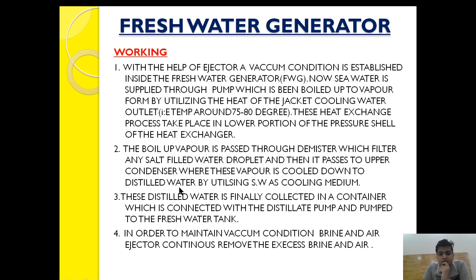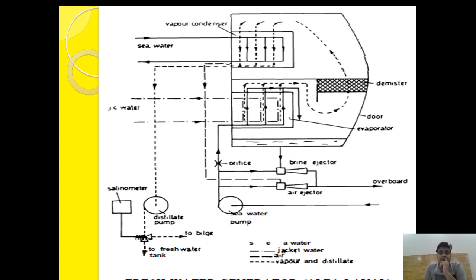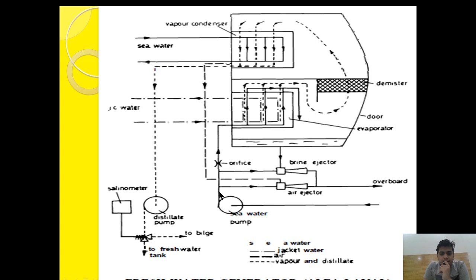After passing the demister, the vapor is passed to the upper condenser where it is cooled down to distillate water by utilizing sea water as the cooling medium. The sea water from the sea water pump also provides cooling for the condenser. The vapor temperature is around 60 to 80 degrees Celsius and it is cooled by sea water having a temperature of 25 to 35 degrees Celsius maximum, which causes the vapor to convert into distillate water.